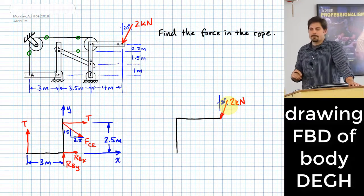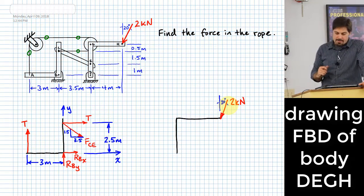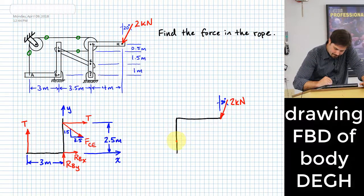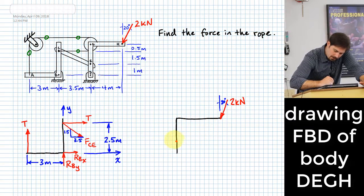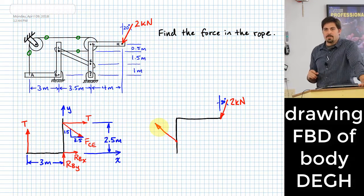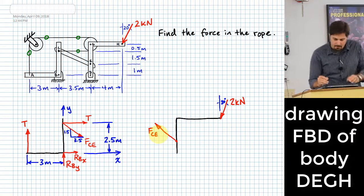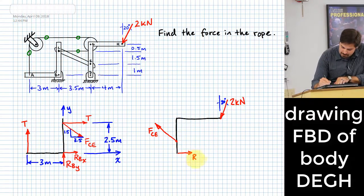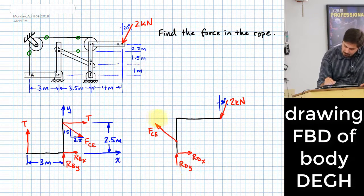At point E we have the force that's going to be in member C-E. What direction should I show that force? Up and to the left, someone says. Newton's third law says for every action there's an equal and opposite reaction, so I need to show it opposite to the direction I showed on the other free body diagram. So FCE there. And there's also the pin at D — RDX and RDY.